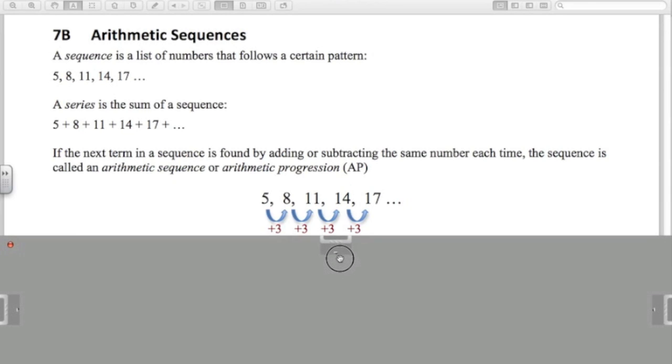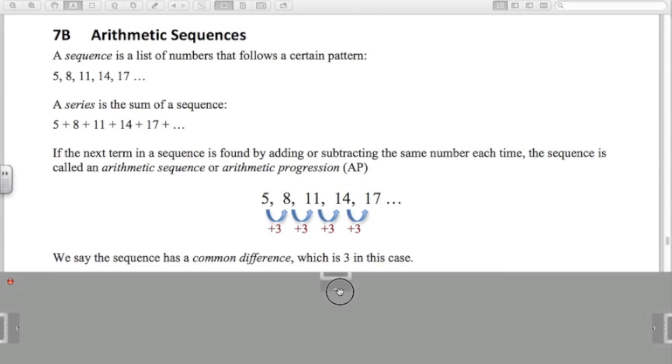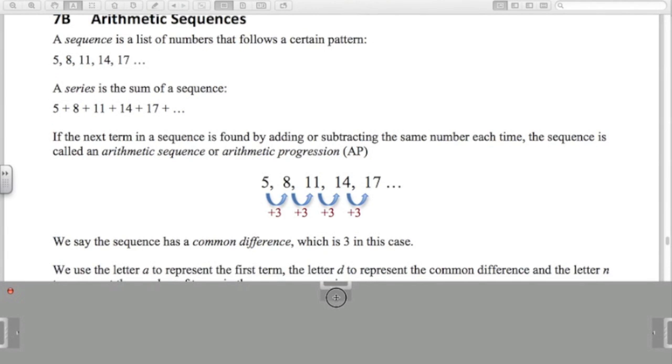If you look at this example, 5, 8, 11, 14, 17, we call the common difference 3. We give it the letter D and say that D is the common difference.